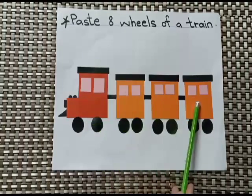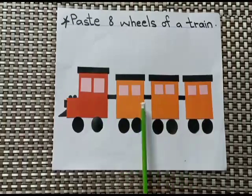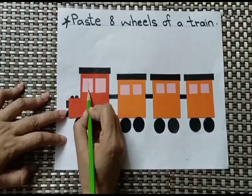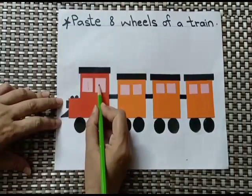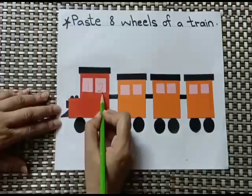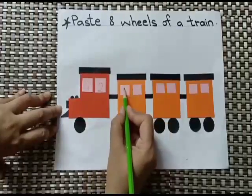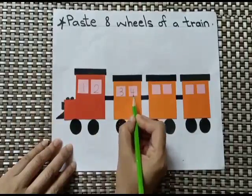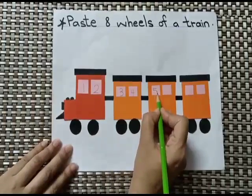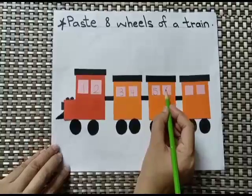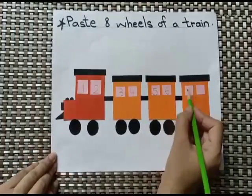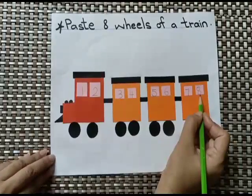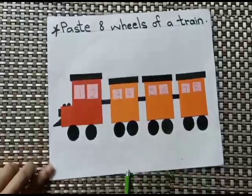There are windows on the train. Can we write numbers in the windows? Let's start from number one. Which number comes after one? Two! Then three, then four — one, two, three, four. Then five, six, seven, eight. We have learned number eight today!